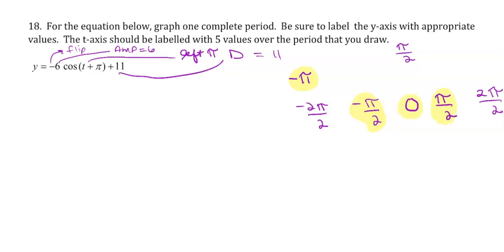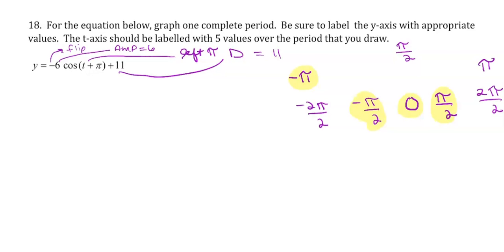0 is good. This is good. 2 pi over 2 is not reduced. I'm going to reduce that to pi, and that is my fifth angle.